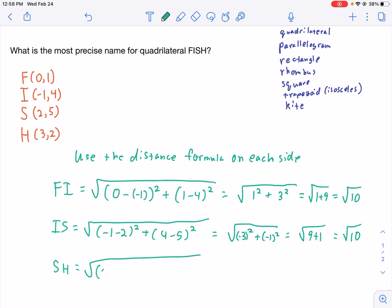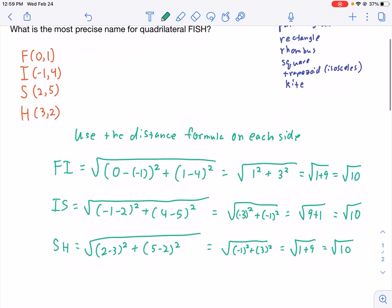This time, we've got 2 minus 3 squared, and we've got 5 minus 2 squared. Well, doing some mixing and matching here, but it looks like 3 of those sides are equal to the square root of 10. And then, how about that last one?